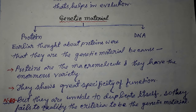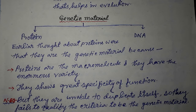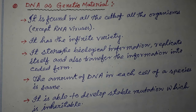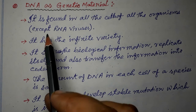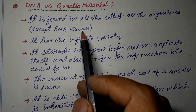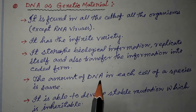Since proteins cannot fulfill all the criteria of genetic material, we reject proteins as genetic material. Now let us see DNA as the genetic material. DNA has the characteristics and features to be a genetic material. It is found in all the cells of all organisms, except RNA viruses. Apart from RNA viruses, DNA is found in all living organisms — plants, animals, prokaryotes, eukaryotes.